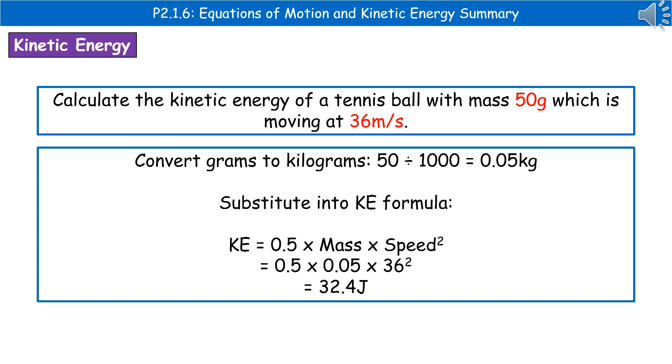Next thing, notice the fact the mass is in grams. So when we're talking about our standard units in science, it should be kilograms for mass. So we've got to change the grams to kilograms, which we do by dividing by a thousand. So 50 divided by a thousand gives us 0.05 kilograms as the mass.